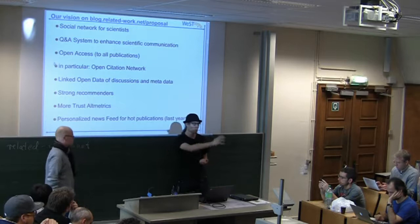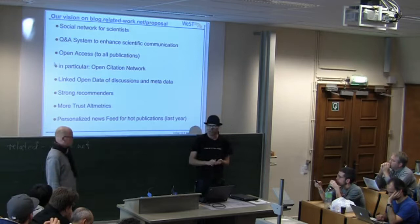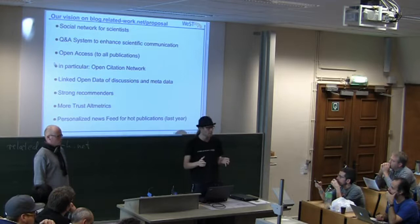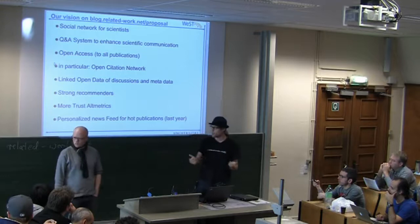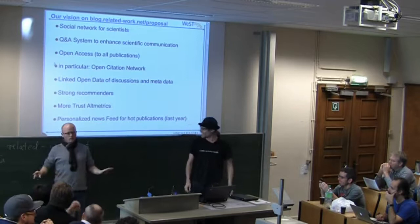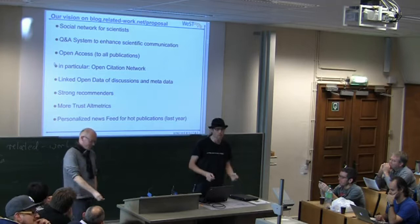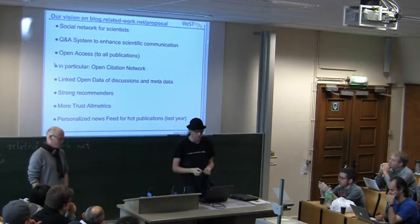One thing Heinrich already did is use arXiv, a free preprint repository with 250 gigabytes of scientific publications, and he extracted the citation graph from it. It's on our website in Neo4j format, so you can just download the Neo4j database. We also want to work on the alt-metrics movement, create more trust with these kinds of metrics rather than relying solely on peer reviewing, and provide personalized news feeds.